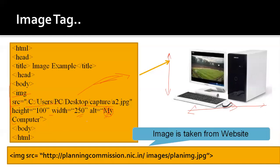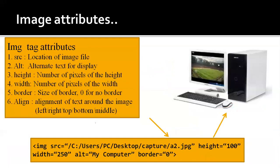As you can see from another example, IMG SRC equal to the full URL of the image taken from a website. The image tag attributes are: SRC indicates the location of the image; alt indicates alternate text for display; height indicates number of pixels for height; width indicates number of pixels for width; border indicates border around the image; and align indicates the alignment of the text around the image.